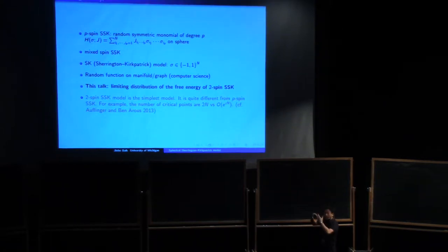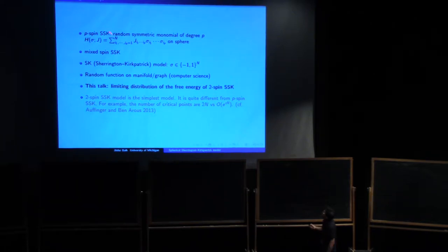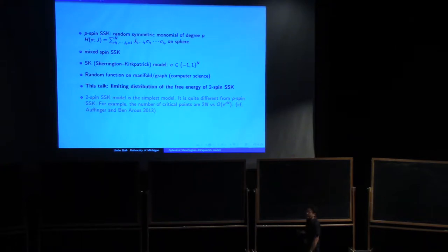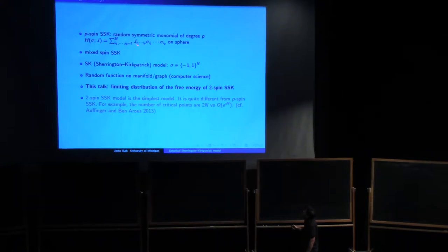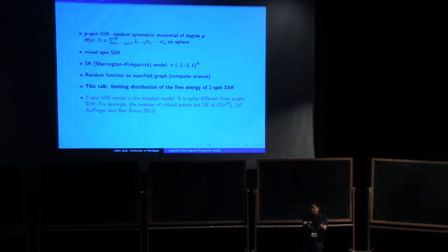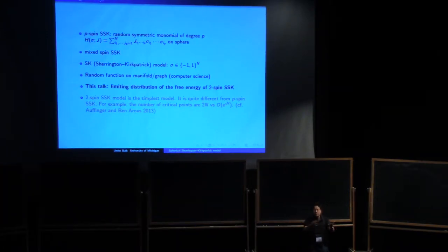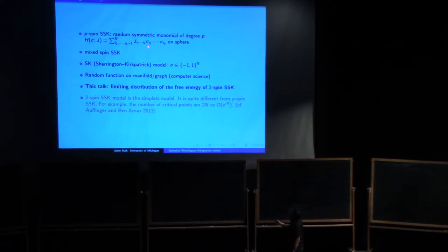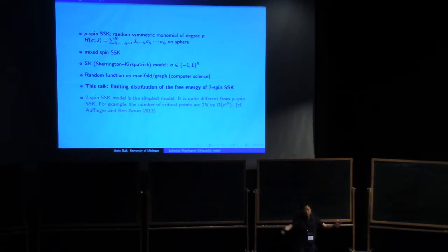More generally, we can think about a much more general framework. Instead of a quadratic symmetric function, you can think about a random symmetric monomial of degree p — that's called the p-spin SSK — where the Hamiltonian is indexed by p indices, asymmetric, like a random tensor. And instead of monomials, you can think about mixtures — general polynomials, or even more general analytic functions on the sphere.